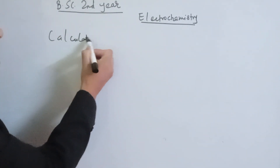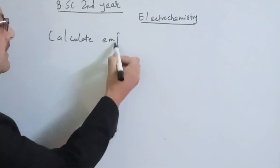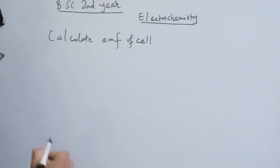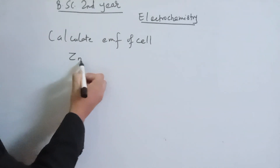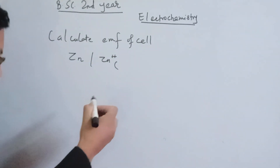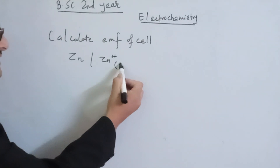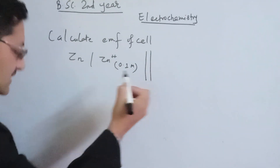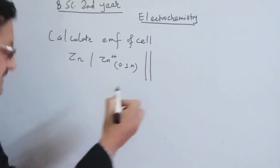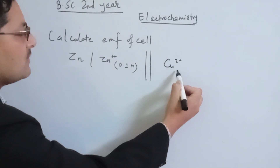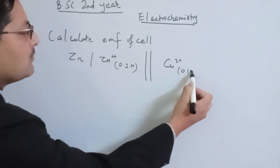Calculate the EMF of the cell. The cell notation is: Zinc / Zn²⁺ (0.1 M) || Cu²⁺ (0.1 M) / Copper. The zinc solution has 0.1 molar concentration, connected by a salt bridge to a copper solution of 0.1 molar concentration.